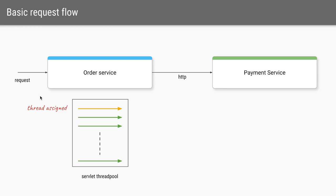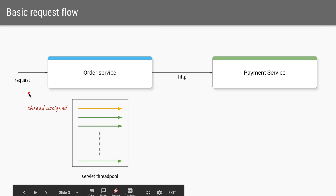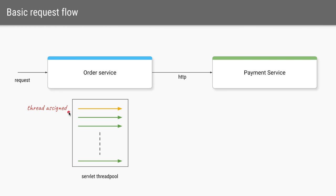Let's say we are building a set of microservices — an order service on the left and a payment service on the right. To fulfill any orders, the order service needs to talk to the payment service. If the order service is built using a framework like Spring Boot, it will have a servlet thread pool where for each incoming request a thread is assigned to serve that request. Once the response is sent back to the user, the thread is freed.